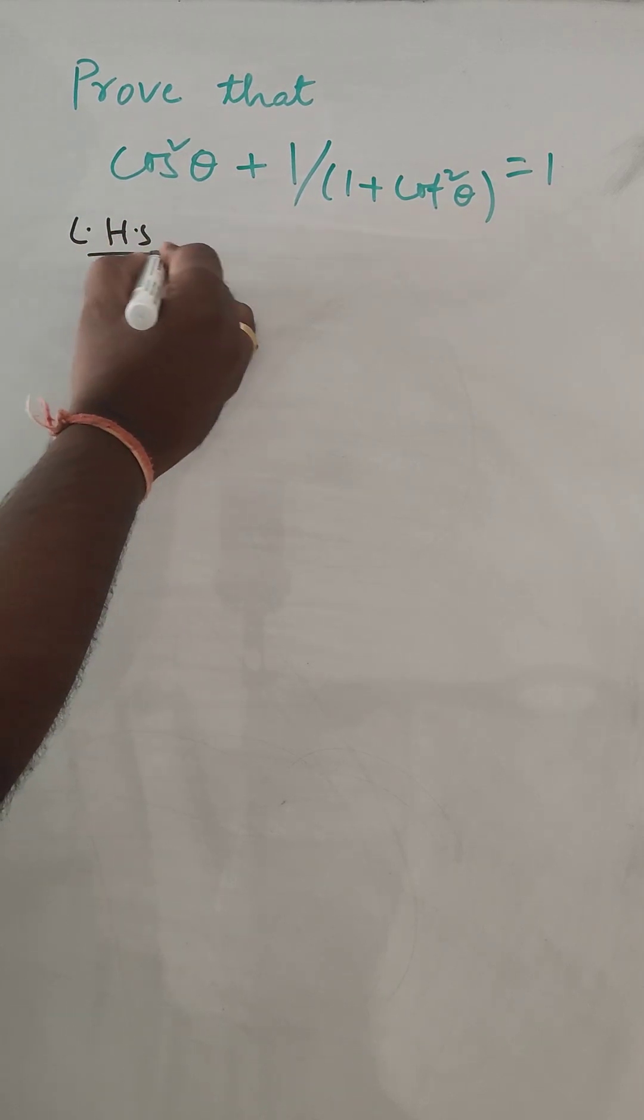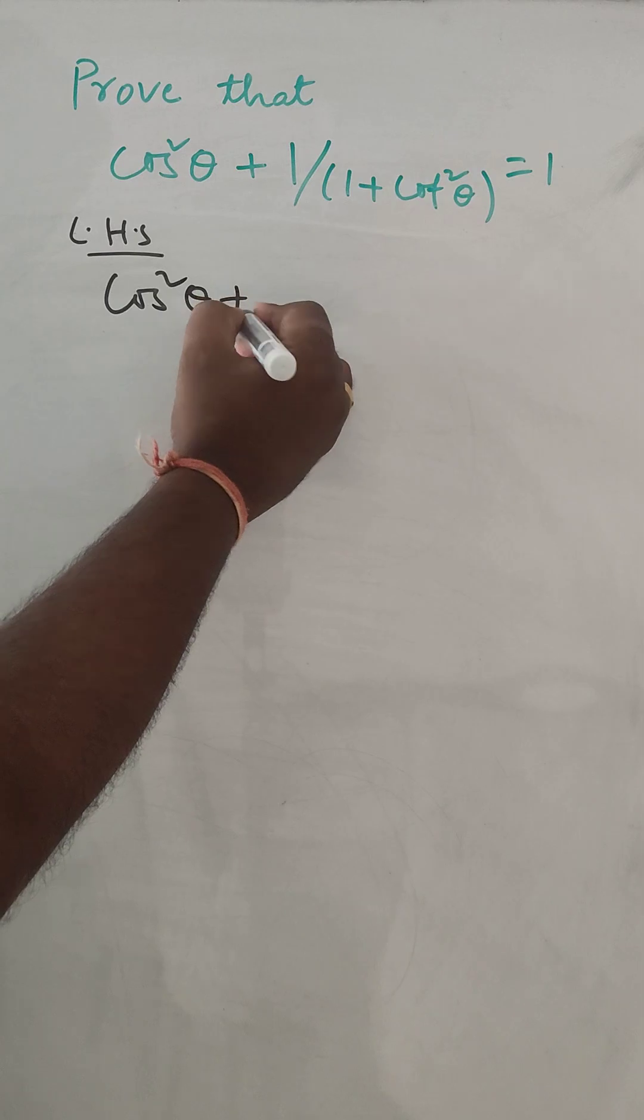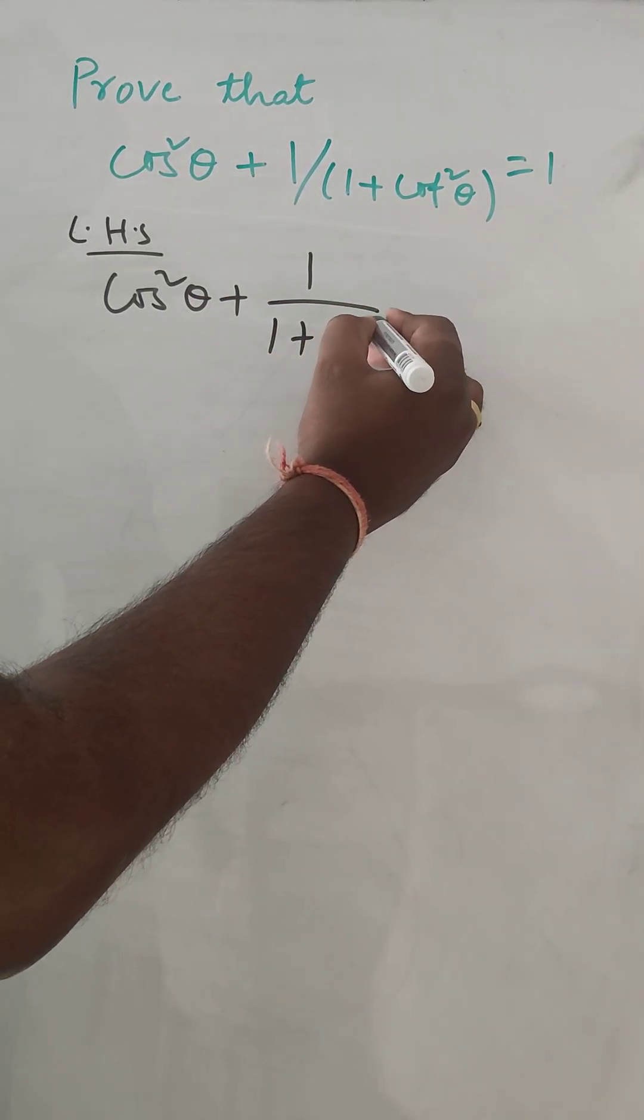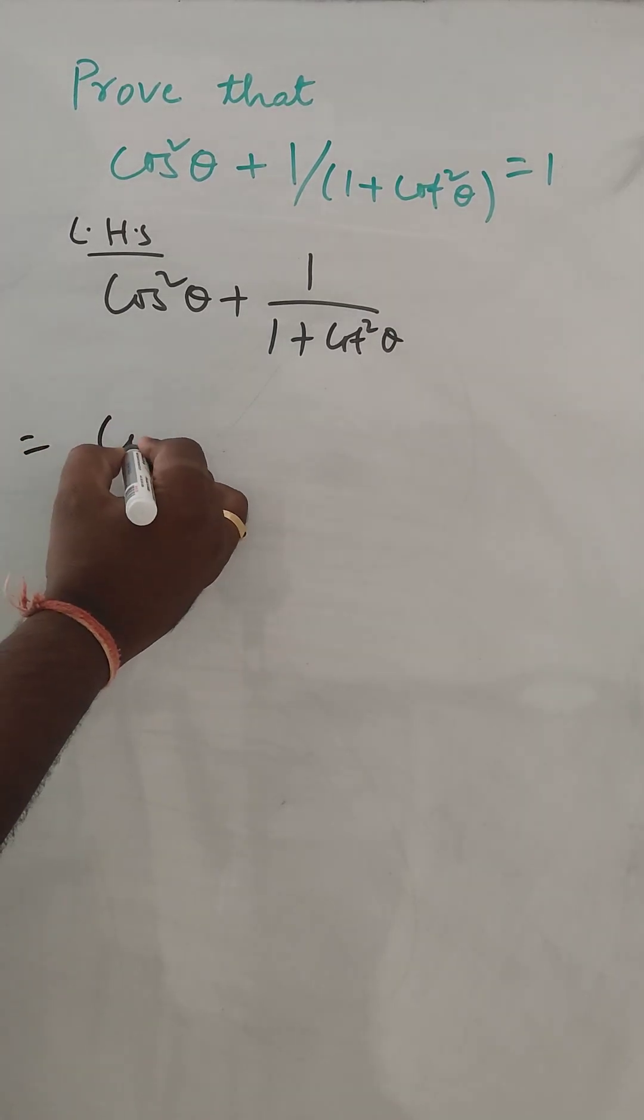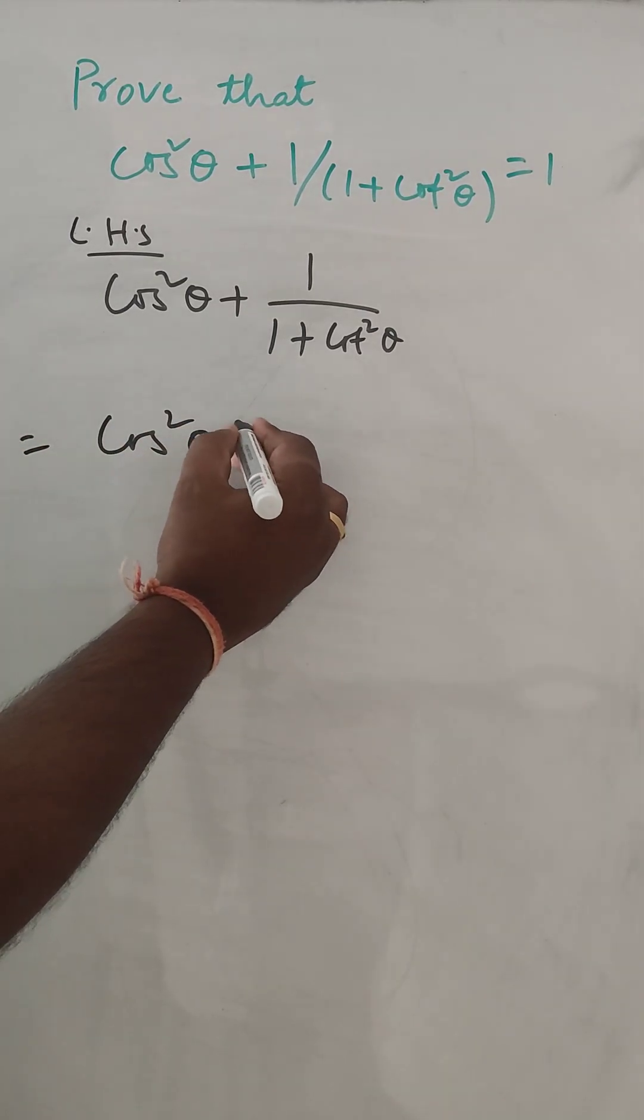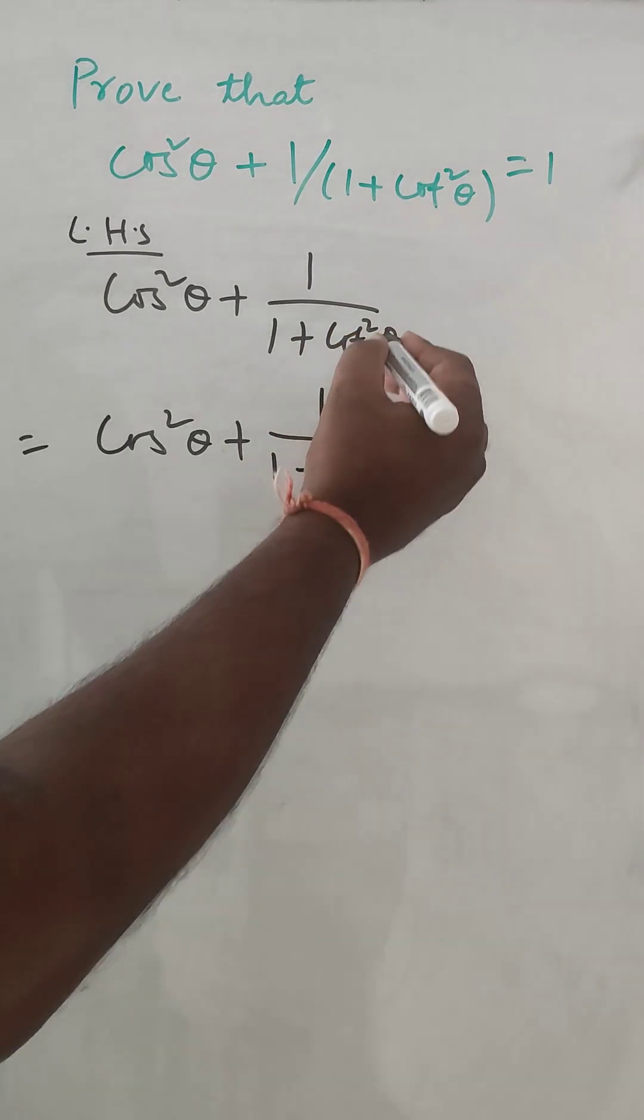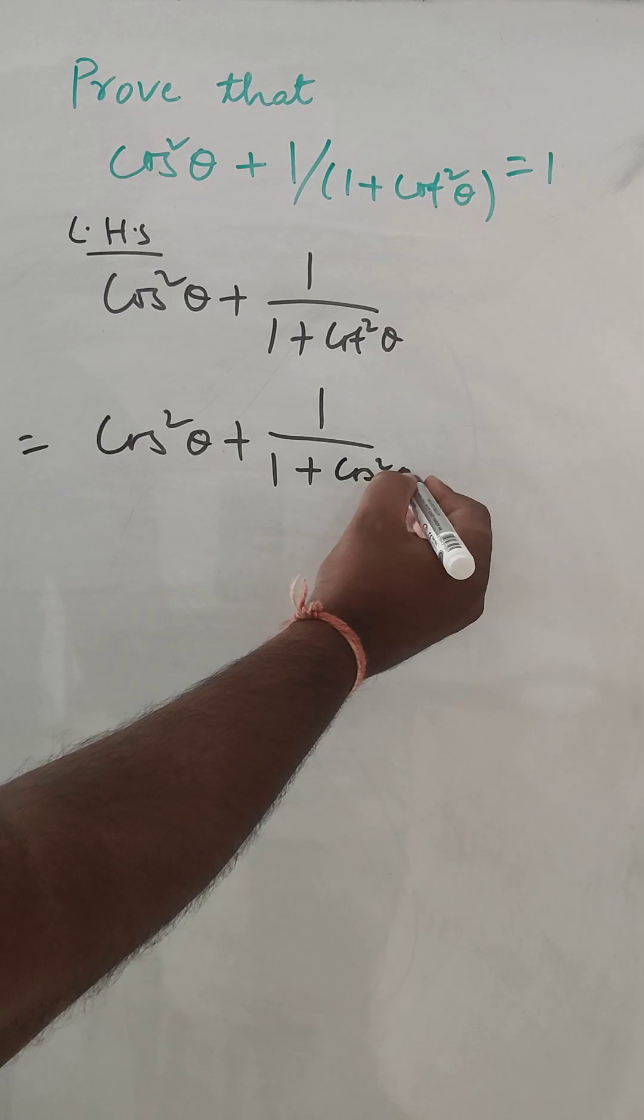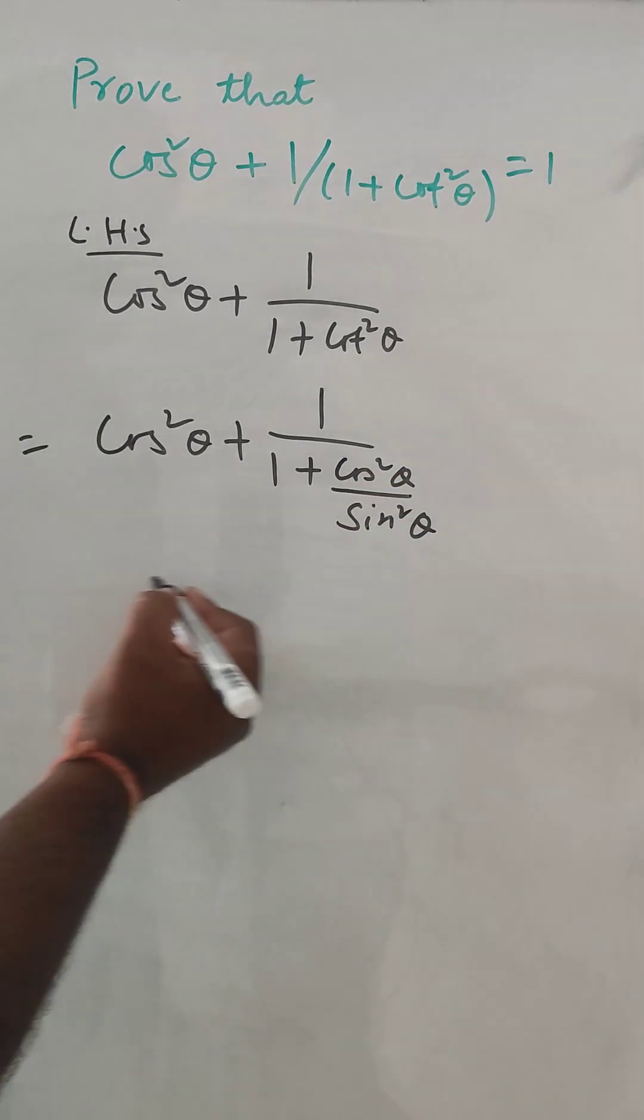So in LHS what we have cos square theta plus 1 by 1 plus cot square theta. So next step cos square theta plus 1 by 1 plus cot square theta will be cos square theta plus 1 by 1 plus cosine square theta by sine square theta.